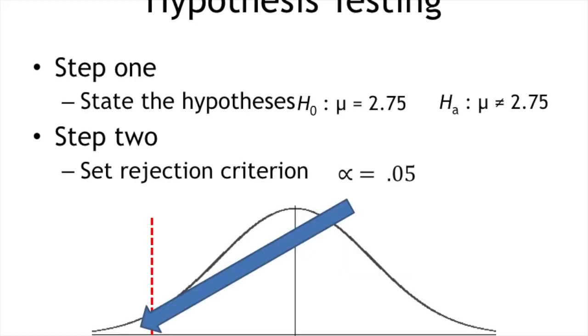Basically, I'm setting a cutoff line, a line in the sand. I'm saying that if the sample mean is above or below the rejection point, I'm going to reject the null hypothesis because the probability of pulling that sample from this sampling distribution is so rare that I can reject the null hypothesis.